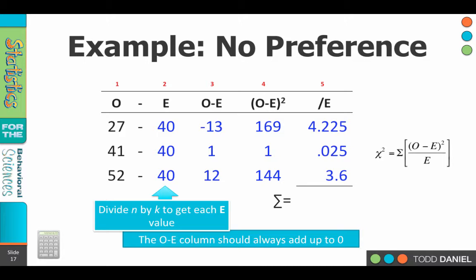The chi-square test is the sum of all of the O minus E squared divided by E values. We now have O minus E squared divided by E in a column. So our last step is, let's add them up. 4.225 plus 0.025 plus 3.6 adds up to 7.85. That is the chi-square for these data.